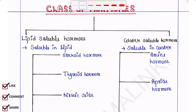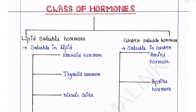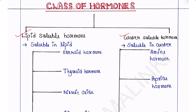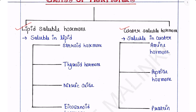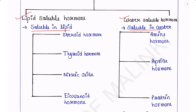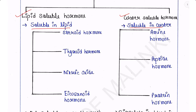Basically, hormones are divided into two classes: lipid-soluble hormones and water-soluble hormones. From the name itself we can understand — lipid-soluble hormones are soluble in lipid and water-soluble hormones are soluble in water. Lipid-soluble hormones include steroid hormones and thyroid hormones.